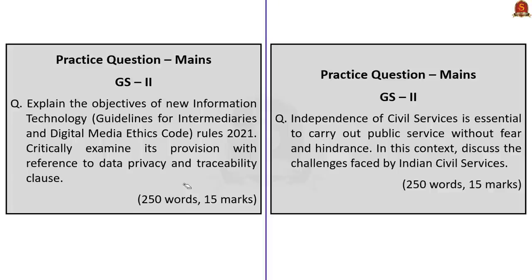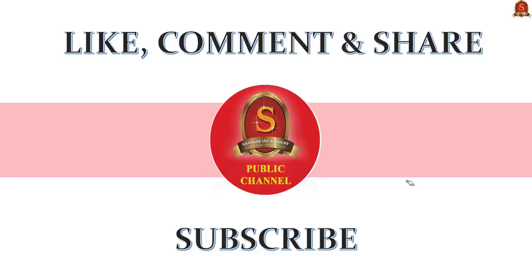Now let us take two main questions. The first question, based on GS Paper 2, asks you to critically examine the IT Rules of 2021 with a main focus on the data privacy issue and the traceability clause — in around 250 words, about 40% should focus on these two aspects. The next question is based on independence of civil services; it is a general question and you can include the challenges discussed today. With this, we have come to the end of today's Hindu News Analysis. If you like this video, don't forget to like, comment and share, and subscribe to the Shankar IAS Academy YouTube channel for more updates related to civil service examination preparation.